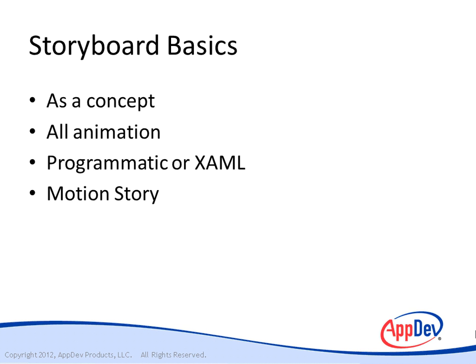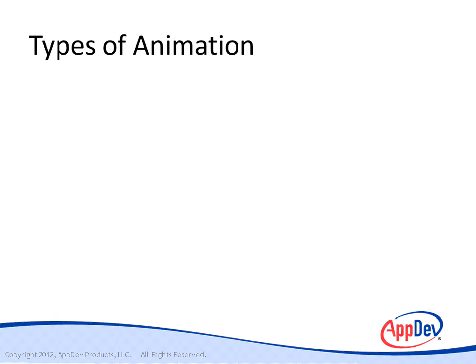A storyboard is the story of the motion you're going to see on the screen. Now let's talk about types of animations. Basically, there's XAML animations or code. That means inside the environments we're talking about — WPF, Silverlight, Windows Phone, and Windows 8 — the code would be done in C#, VB, C++, or whatever language you happen to be using. And then there's XAML.